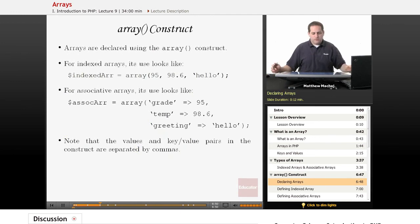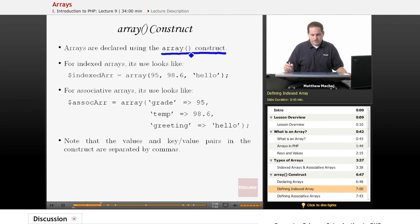So how do we define an array? Well, in PHP, it's defined using what's known as the array construct, which is the word array and then a pair of parentheses. For indexed arrays, an array declaration is going to look like this. You have the variable name. You have the construct array with its two parentheses. And then you have a comma delimited list of values in the array. So we have 95, the number 95, the floating point value 98.6, and the string hello.